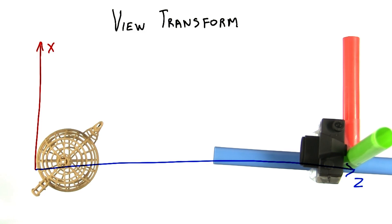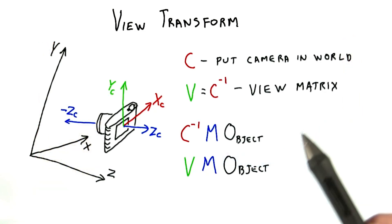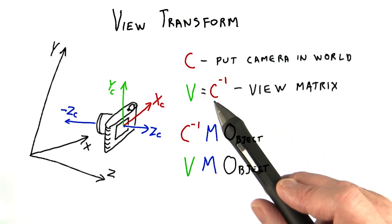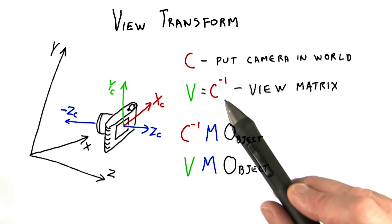This inverse matrix is called the view matrix. For this reason, this view matrix is sometimes written as the inverse of the camera matrix, the matrix that would move the camera to its place in world space.